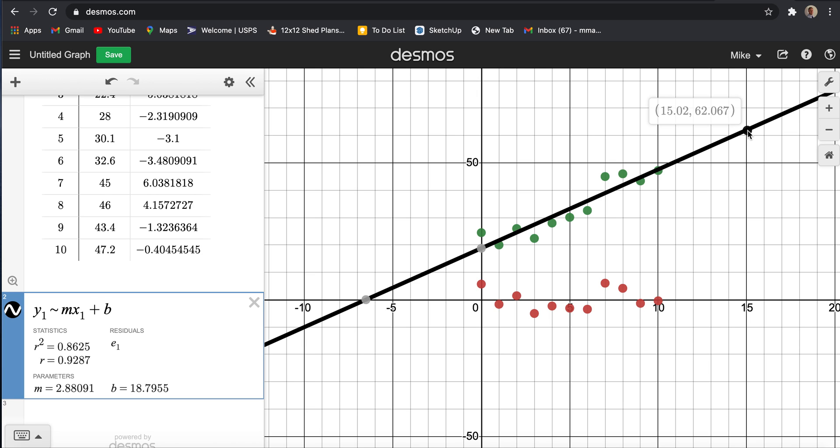And they're considered to be less accurate because we don't know what would happen to that data if we continue to collect it. If we collected some more points, we don't know. Maybe this goes down or maybe it goes up at a steeper rate. A linear model might not even represent the data very well after that point. So interpolations are predictions based within the data set. Extrapolations are based outside the data set, and they're considered less accurate.